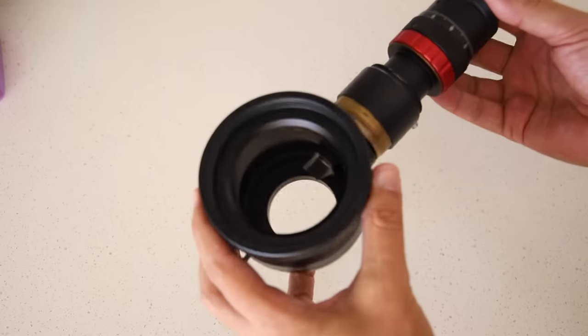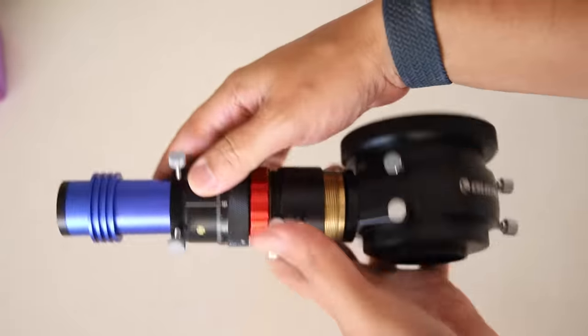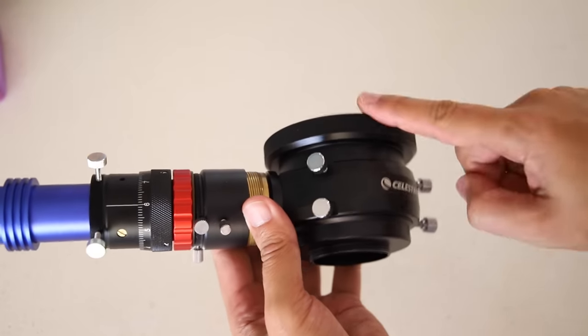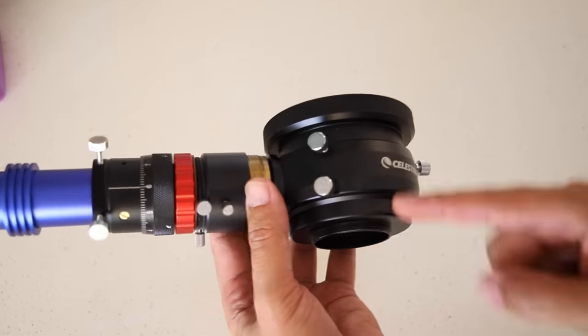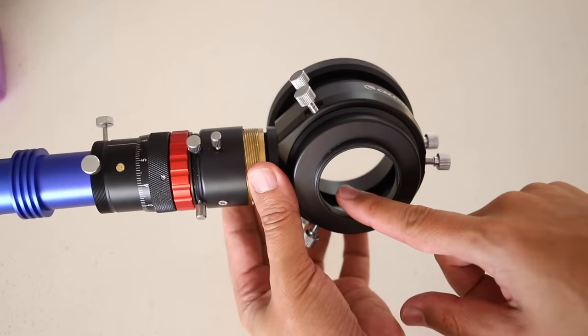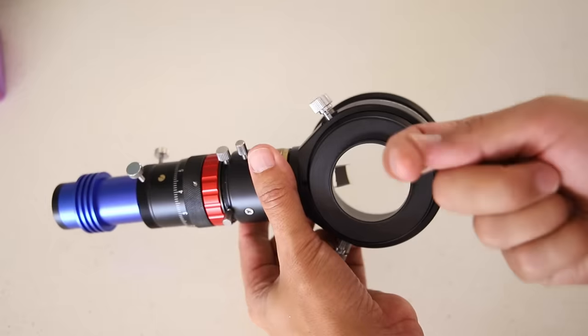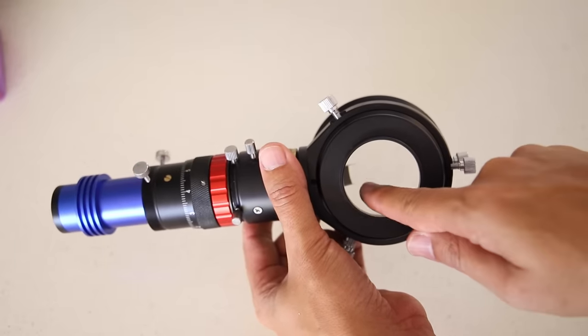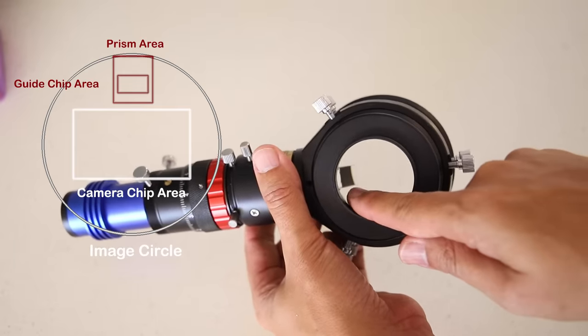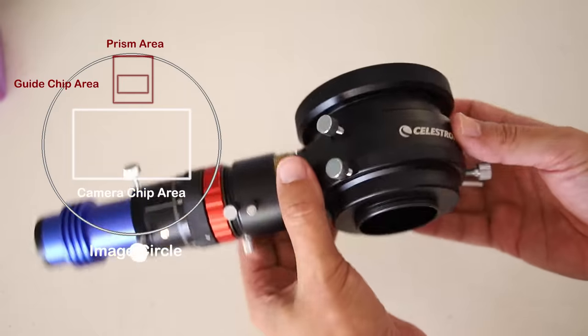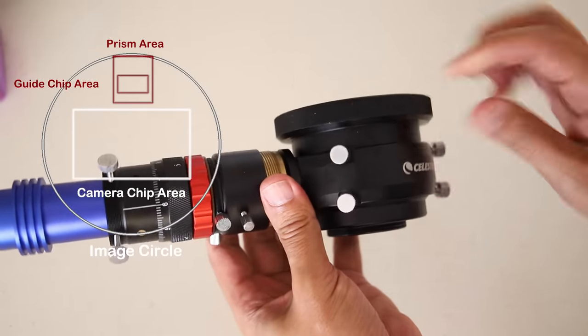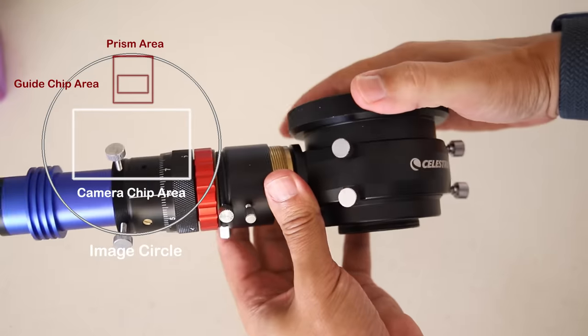So what is an off-axis guider anyway? Let me explain. This bit goes to the telescope, this bit goes to the camera, and there's a prism in here which deflects a little bit of light off to this guide camera on the side. Most of the light comes through back into your camera. This doesn't actually deflect any light from the main image.